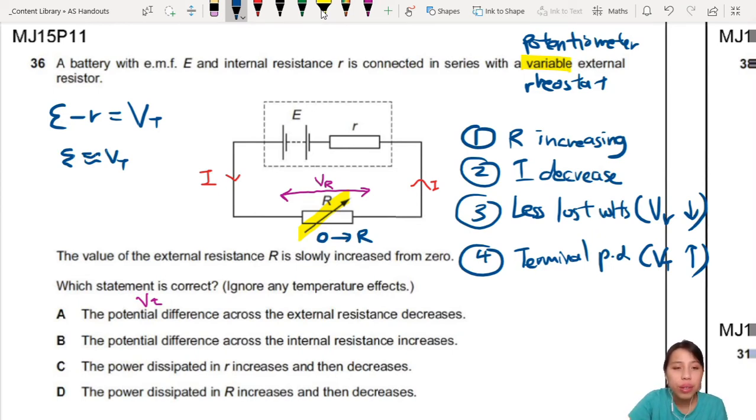You want to write down what happens when you change the resistance in the circuit. So here they say your VT across your external resistance will decrease. No, it should increase. Your terminal PD VT is also the potential difference across your external resistor. Both will increase. So this part is wrong. It should increase, not decrease.